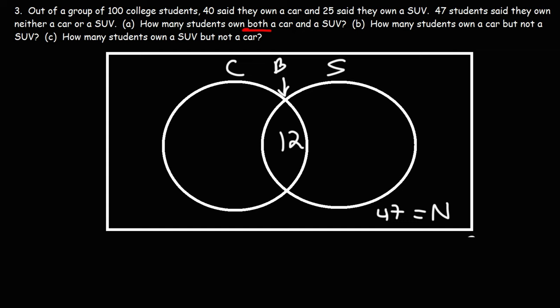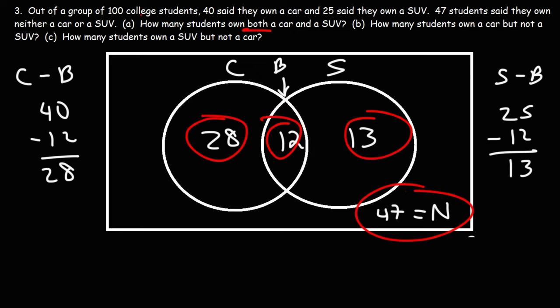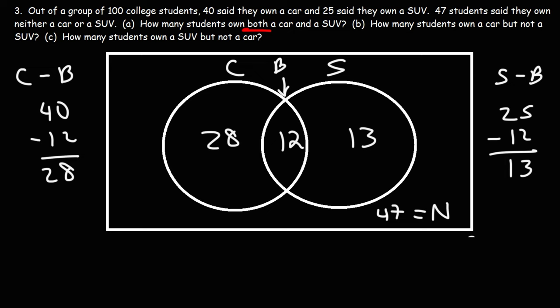Part B: how many students own a car but not an SUV? That's C minus B — 40 minus 12 equals 28. Part C: how many students own an SUV but not a car? That's S minus B — 25 minus 12 equals 13. To check your work, all four numbers must add up to the total: 28 plus 12 is 40, plus 13 is 53, plus 47 equals 100. So that's it for this video — now you know how to solve word problems associated with Venn diagrams involving two categories. Thanks for watching.